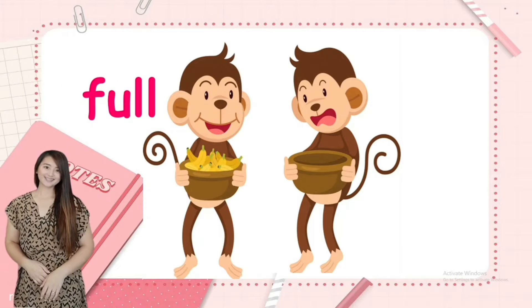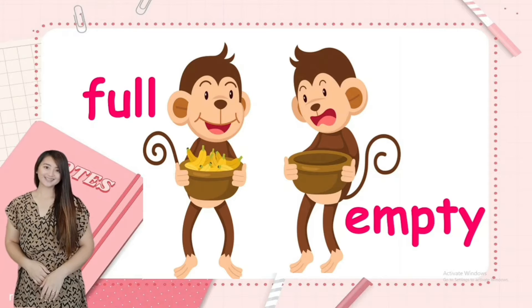Next, we have full and empty. Look at the picture. This monkey is holding a bowl full of bananas — full. And this monkey is holding a bowl with no bananas; the bowl is empty. Full, empty. So full and empty are opposite ways.